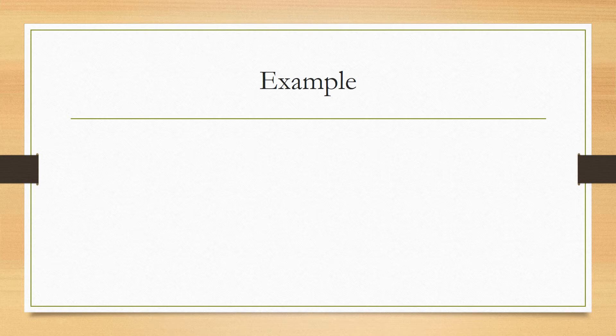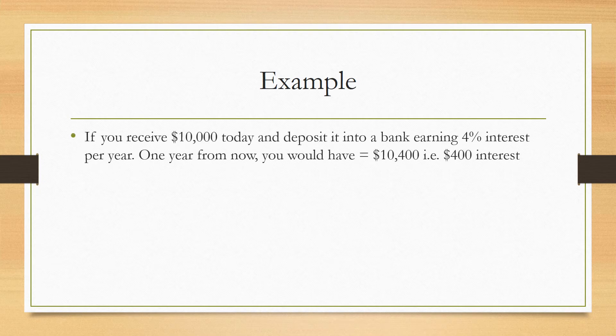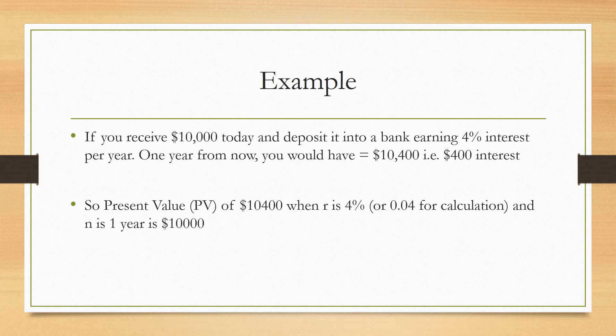Here's another example to clarify this. If you receive ten thousand dollars today and deposit it into a bank earning four percent interest per year, one year from now you would have ten thousand four hundred dollars — four hundred additional dollars in interest. So ten thousand dollars today becomes ten thousand four hundred dollars in the future. The present value of ten thousand four hundred dollars, when the rate of interest is four percent, is ten thousand dollars.